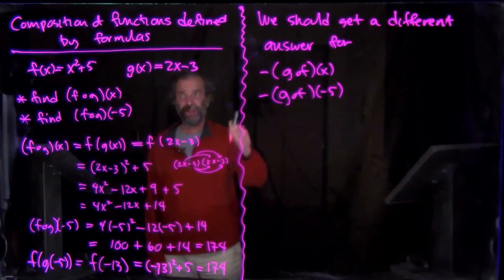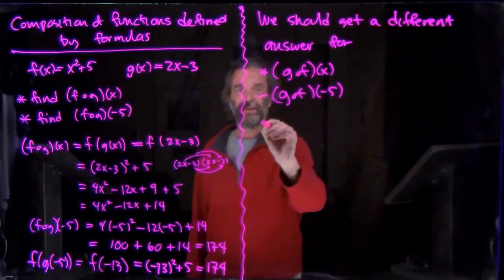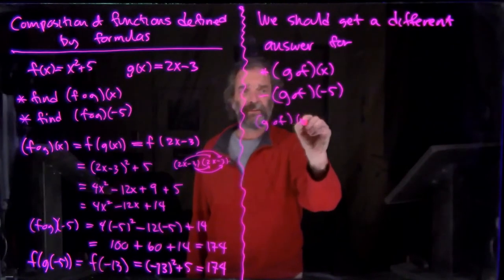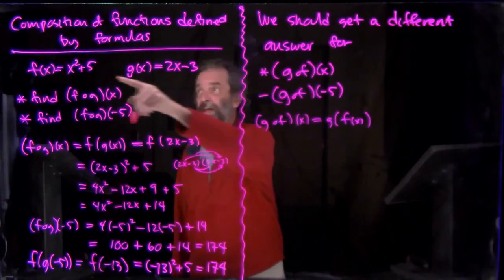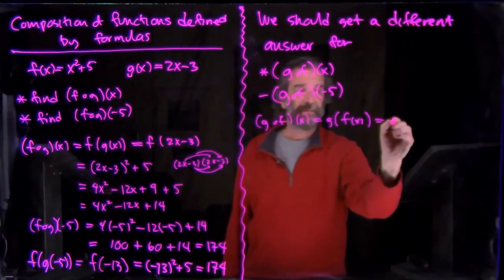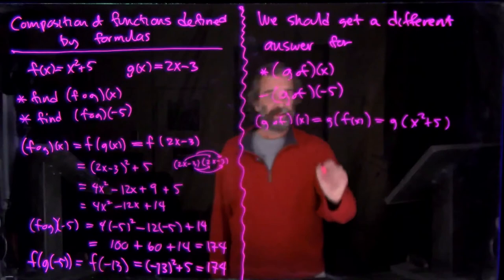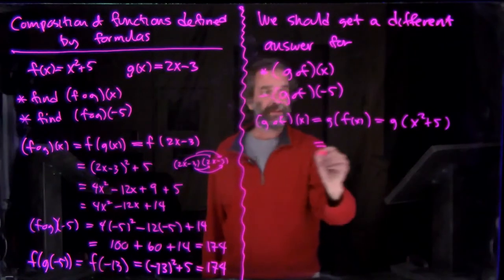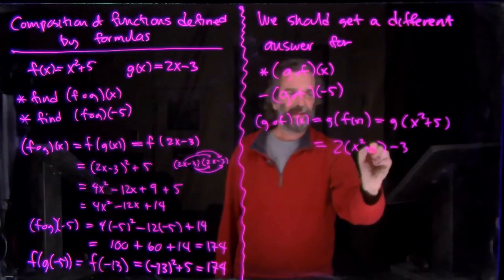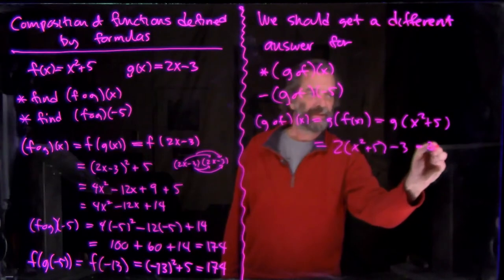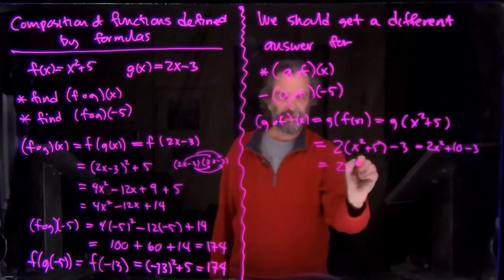And then over here it says we should get a different answer for g composed with f because it's the opposite direction. Let's see what that looks like. g composed with f at x is g(f(x)). g looks like that. f looks like that. So we go g(x² + 5). And then g is twice the thing minus 3. So twice the thing. Oh, sorry. Minus 3. x² + 5. So you get 2x² + 10 - 3. So it's 2x² + 7.